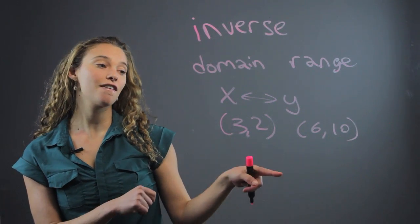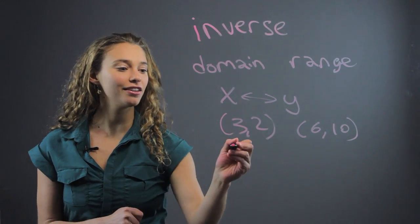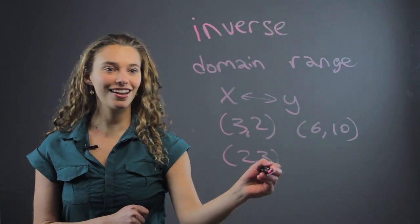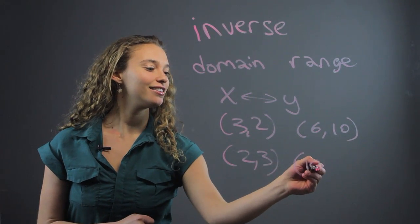the inverse of that function when you graph it, the points are going to be (2, 3) and (10, 6).